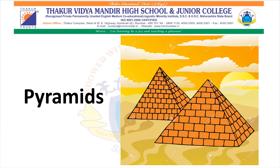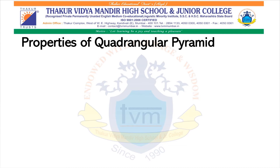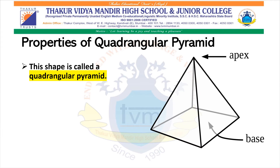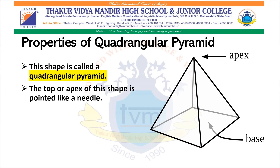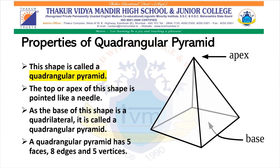Pyramids. Properties of Quadrangular Pyramid: This shape is called a Quadrangular Pyramid. The top or apex of this shape is pointed like a needle. As the base of this shape is a quadrilateral, it is called a quadrangular pyramid. A quadrangular pyramid has 5 faces, 8 edges and 5 vertices.